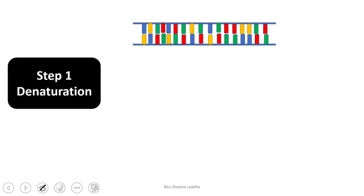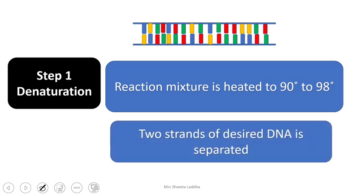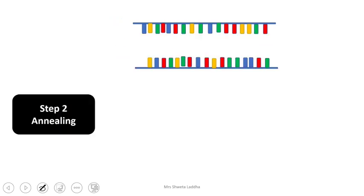Let us see what happens in denaturation. This is the desired segment of DNA. We are heating the reaction mixture to 90 to 98 degrees, very high temperature. What happens to the two strands of the DNA? They get separated. So we are denaturing, separating the two strands from one another by heating to 90 to 98 degrees.